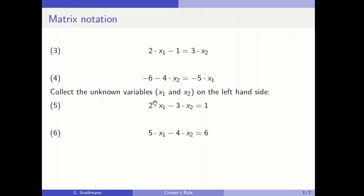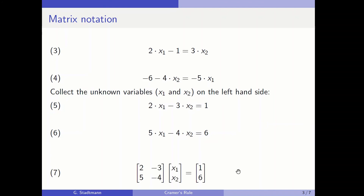Now we have sorted the two equations so that the unknown variables x1 are located below each other in the two equations, making it possible to write these two equations as a system of matrices and vectors. We have collected the 2 and the minus 3 in the upper part and the 5 and the minus 4 in the lower part.